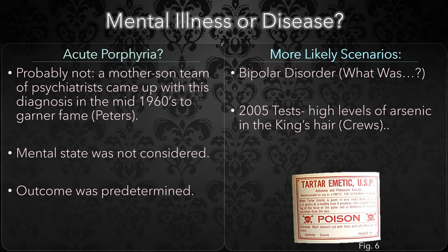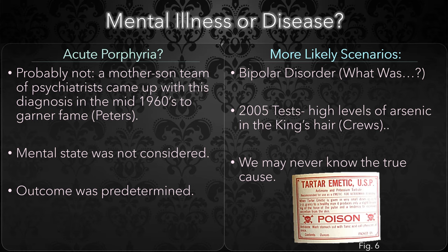It should be noted that it is not thought that either arsenic or lead, which was also found in the King's hair, caused his mania in the first place. Literally everyone who lived in the 16th or 17th centuries had lead in their bodies. Unfortunately, we may never know the true cause of the King's madness since contemporary medicine was ill-prepared to deal with the complex issues from which King George suffered. And since we cannot go back in time to examine the King using more modern methods, there is no way to definitively diagnose him, but we can at least dispel some incorrect myths.